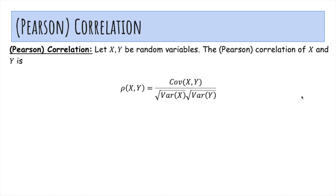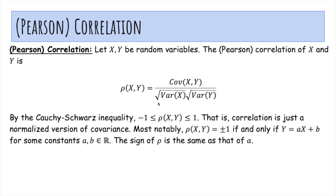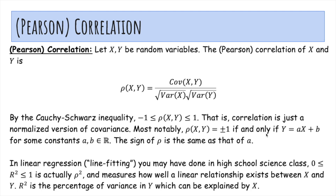So now correlation. The correlation of X and Y is denoted rho of X and Y, and it's the covariance divided by the square root of the variances. And in some linear algebra, you learn the Cauchy-Schwarz inequality, which proves that the correlation is always between negative one and one. That is, it's just a normalized version of covariance. And most notably, the correlation is plus or minus one exactly when, if and only if, Y is a perfect linear function of X and the sign of rho will be the same as the sign of a.